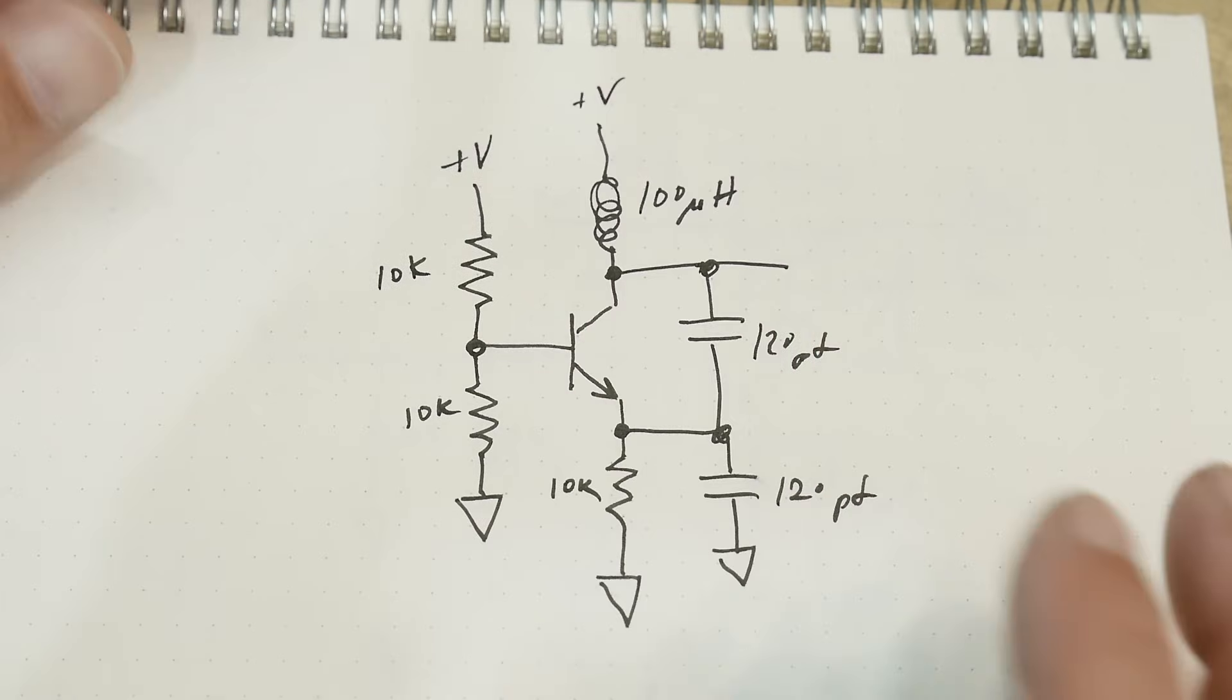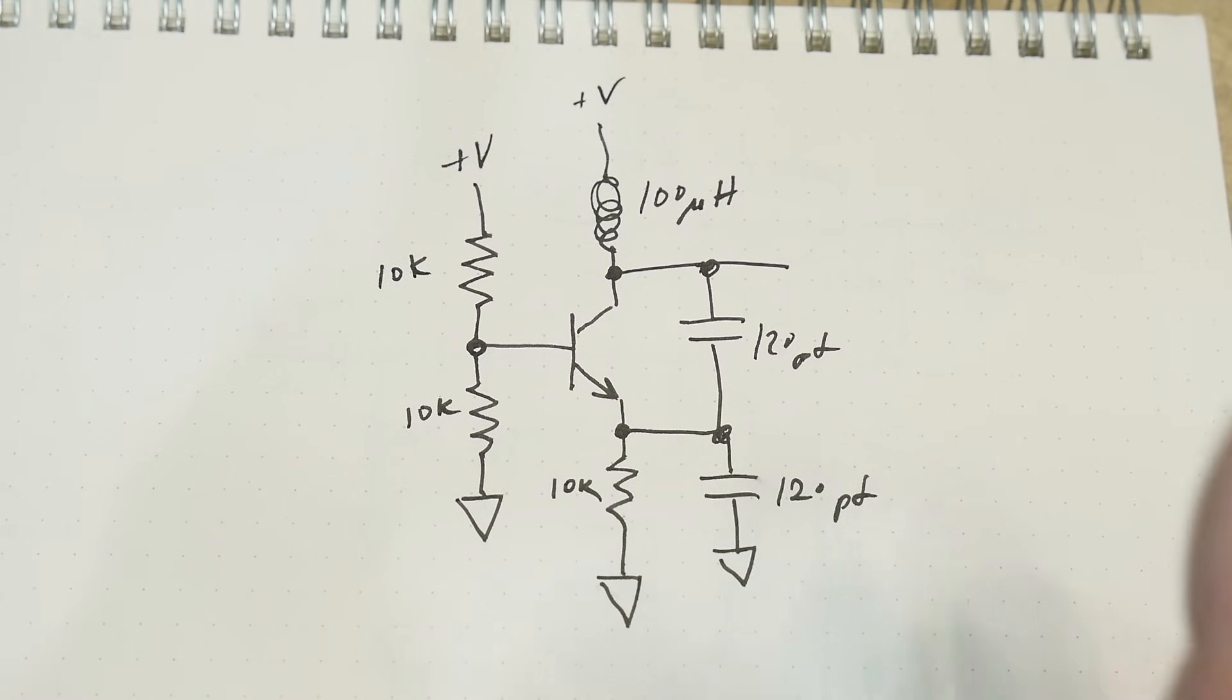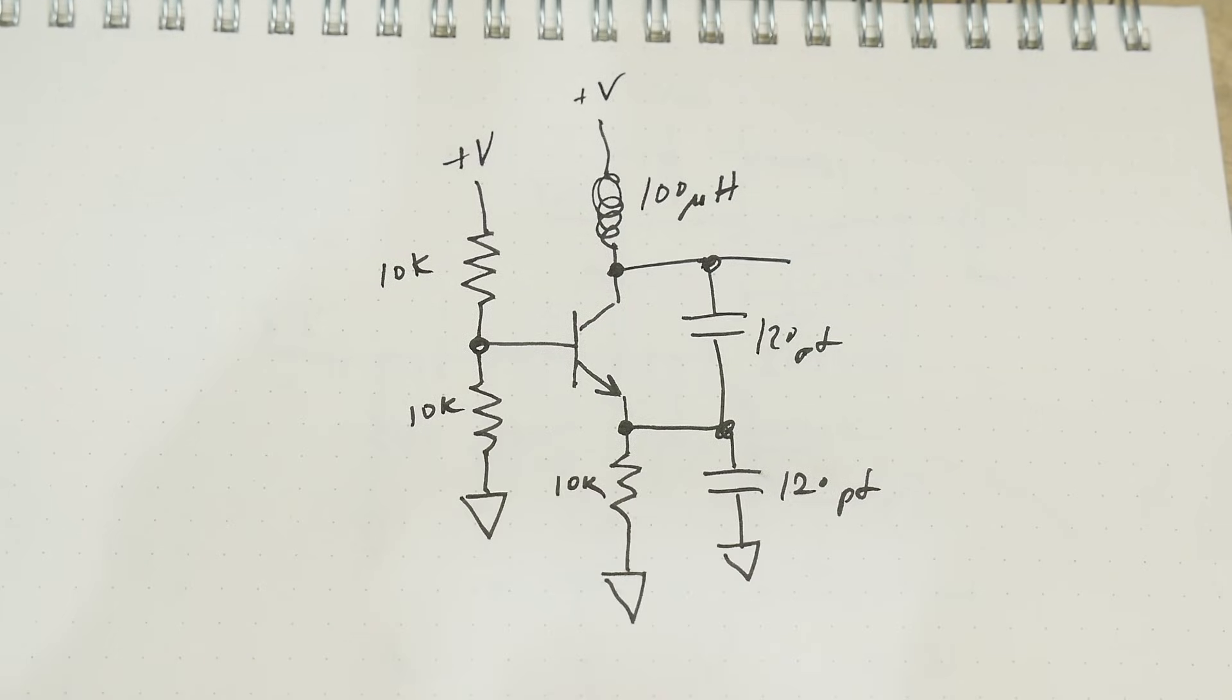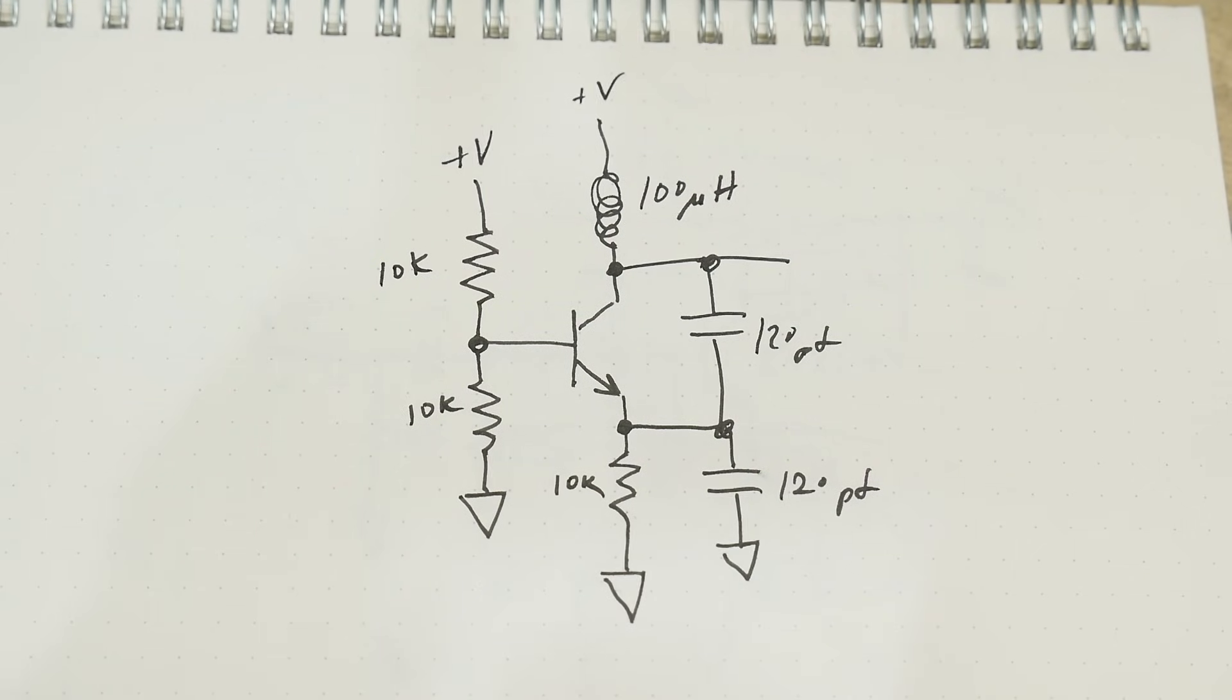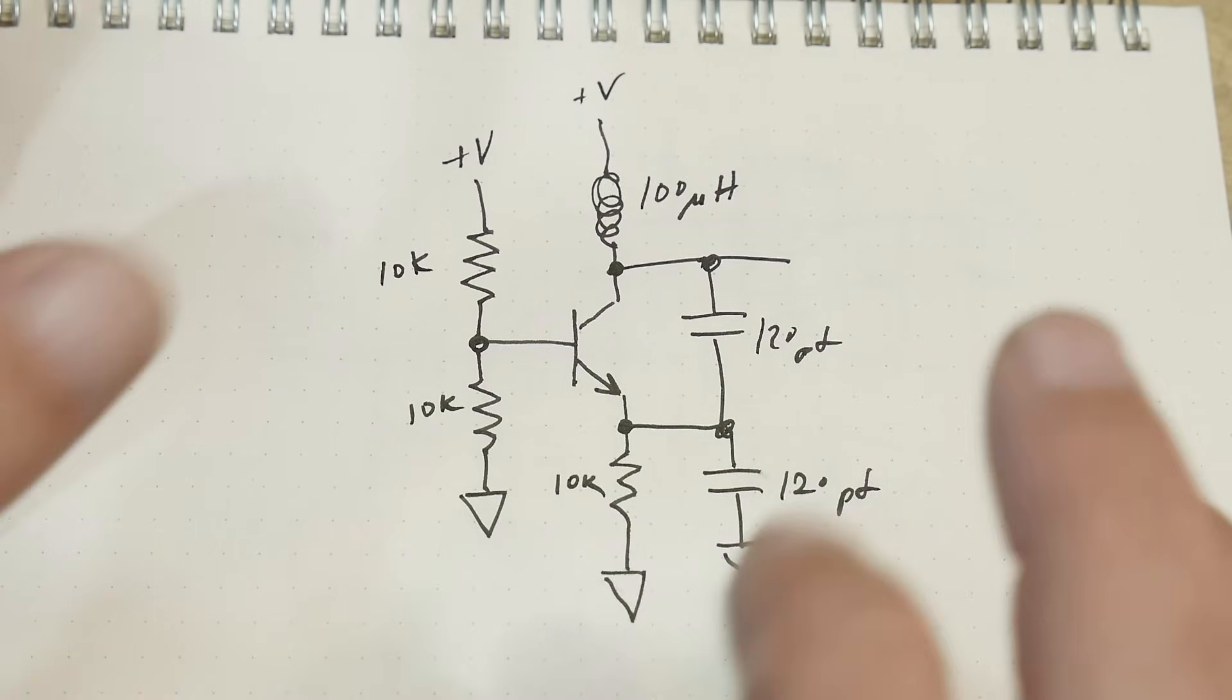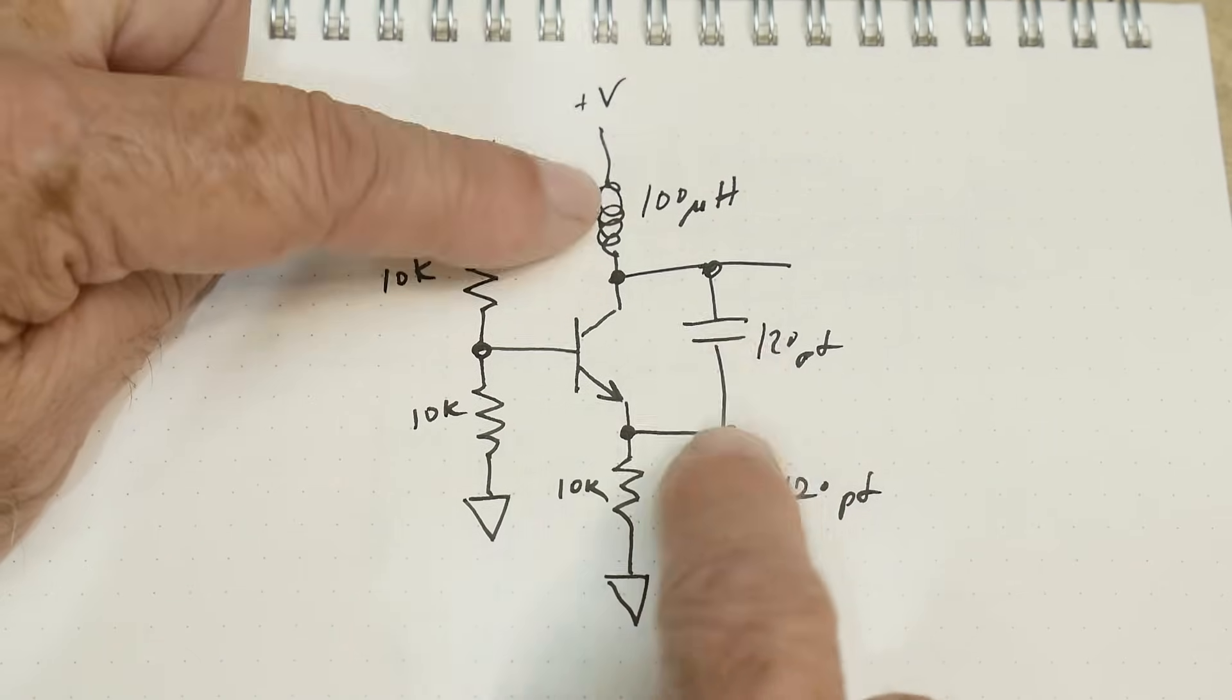It's often labeled a Colpits oscillator, although there's a large variety of topologies when people use the word Colpits. I'm not exactly sure if this is classic Colpits. Most Colpits feed back to the base or have a tank circuit out. The tank circuit here, the L and the C, are these here.